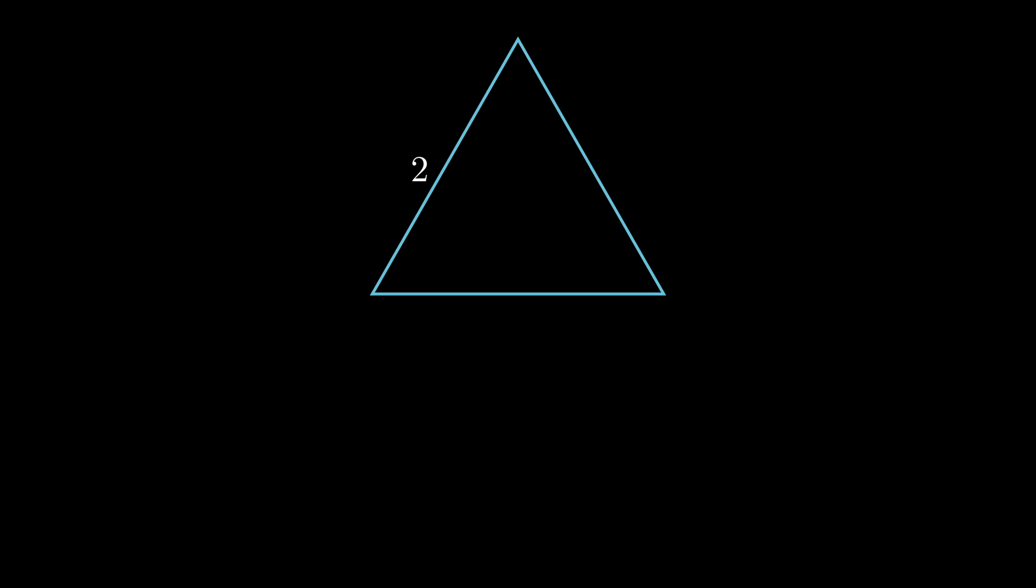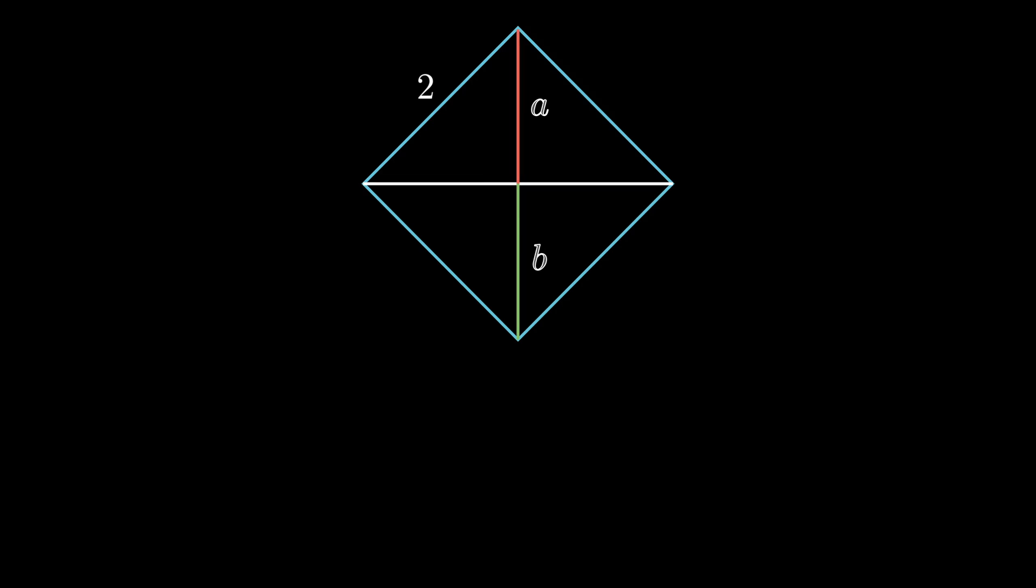Take an equilateral triangle with sides equal to 2. The square of a height is equal to 3. Take a square of side length 2 and put a diagonal through. The other diagonal is split in half, and summing squares of these halves gives us 4.